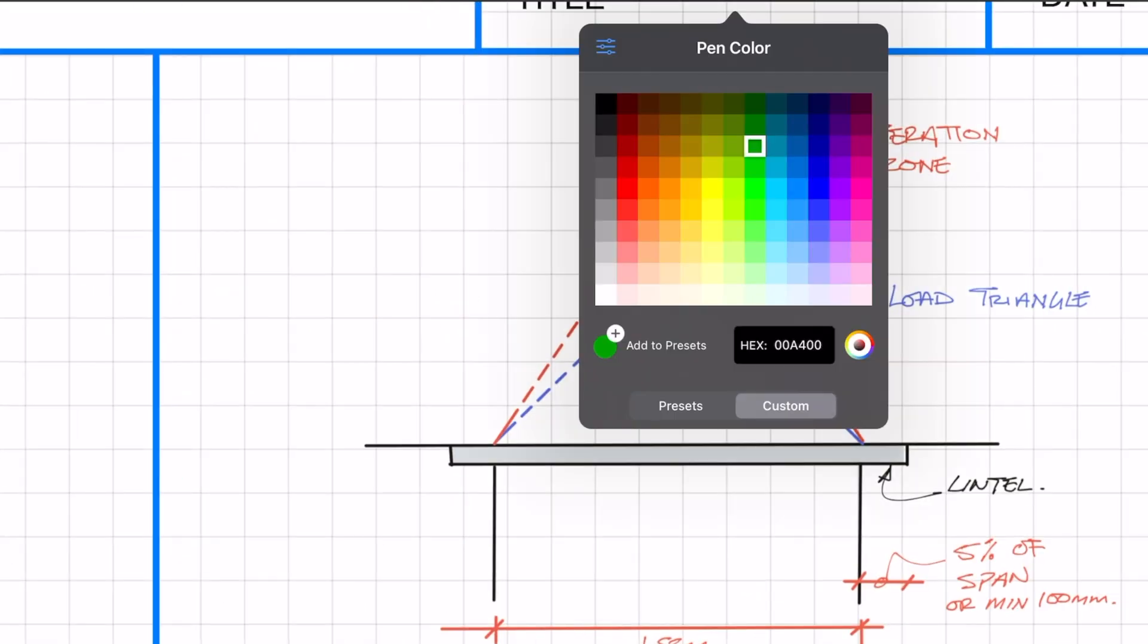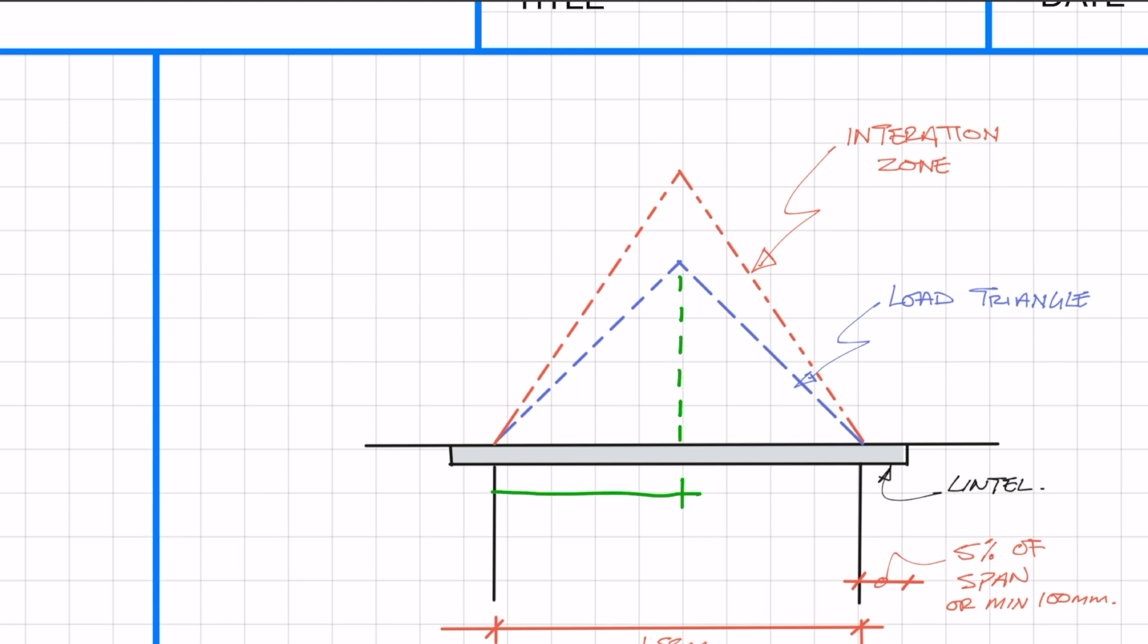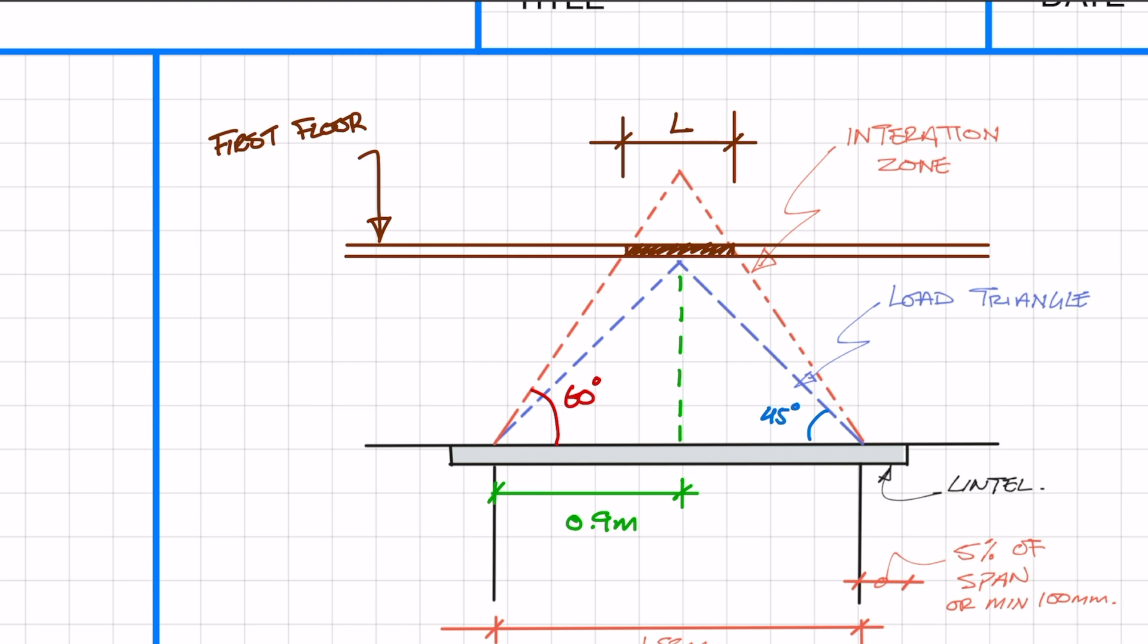So now what we want to do is just work out some dimensions. I'm going to mark on where the timber floor is which is just above the loaded triangle and in the interaction zone. We need to calculate the amount of timber floor which is acting on the lintel and we're going to denote that with the letter L. We also need to calculate the height of the loaded triangle and also the height of the interaction zone and we're going to denote that by H1 and H2.